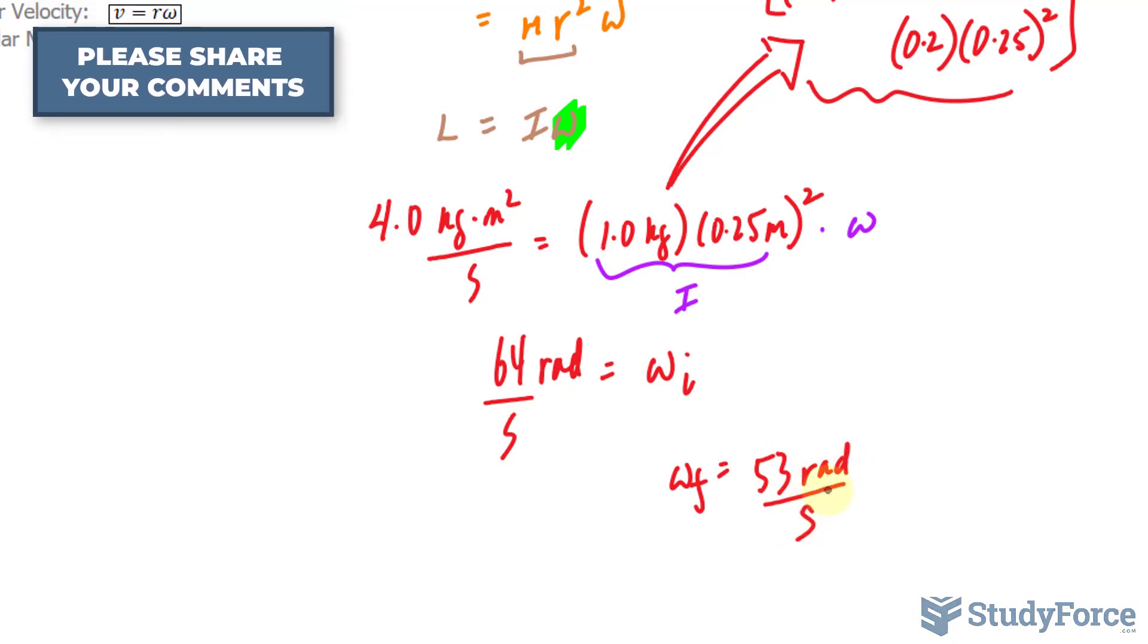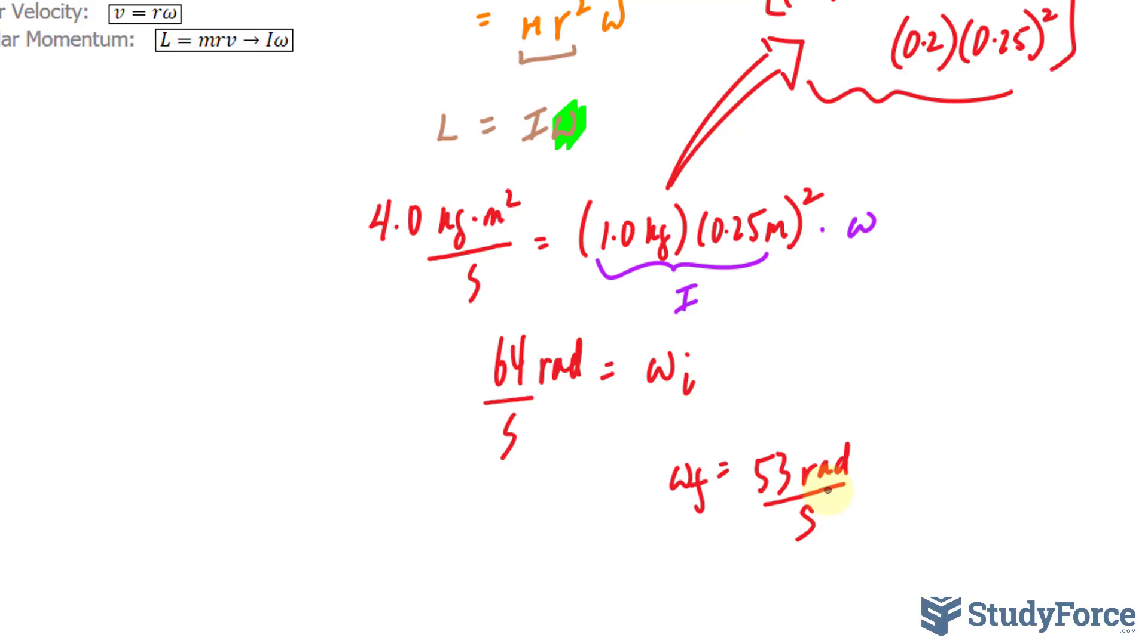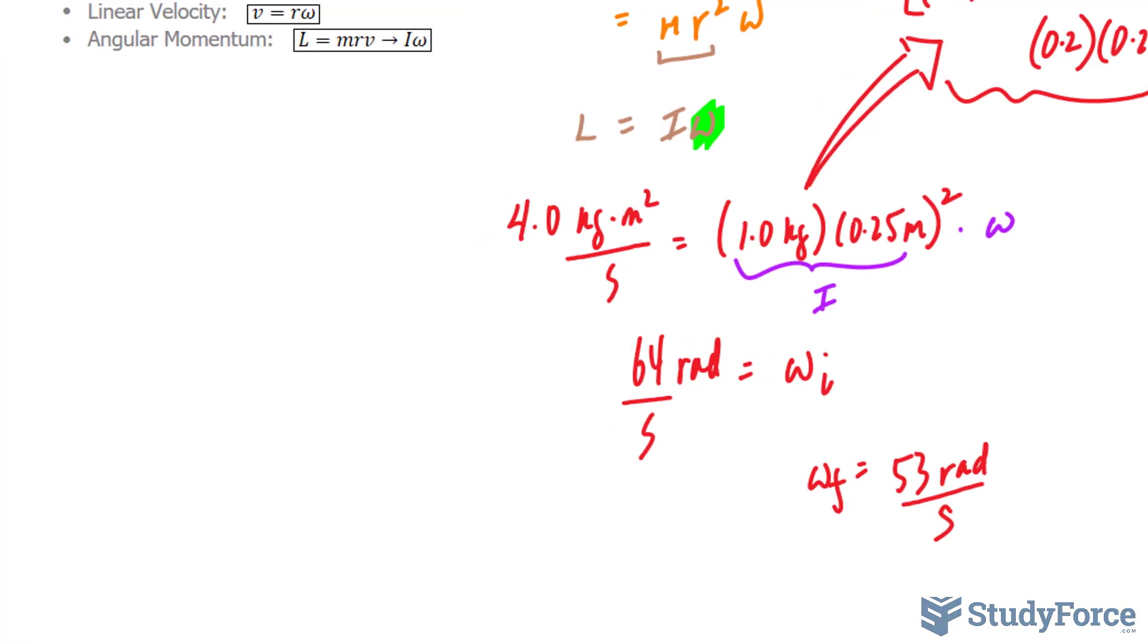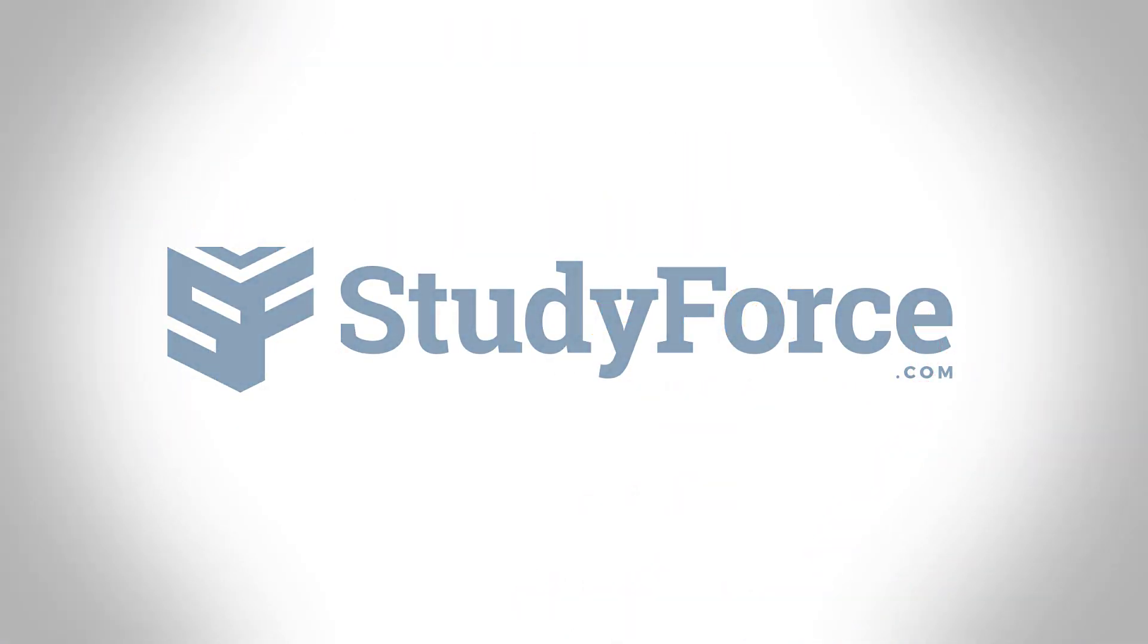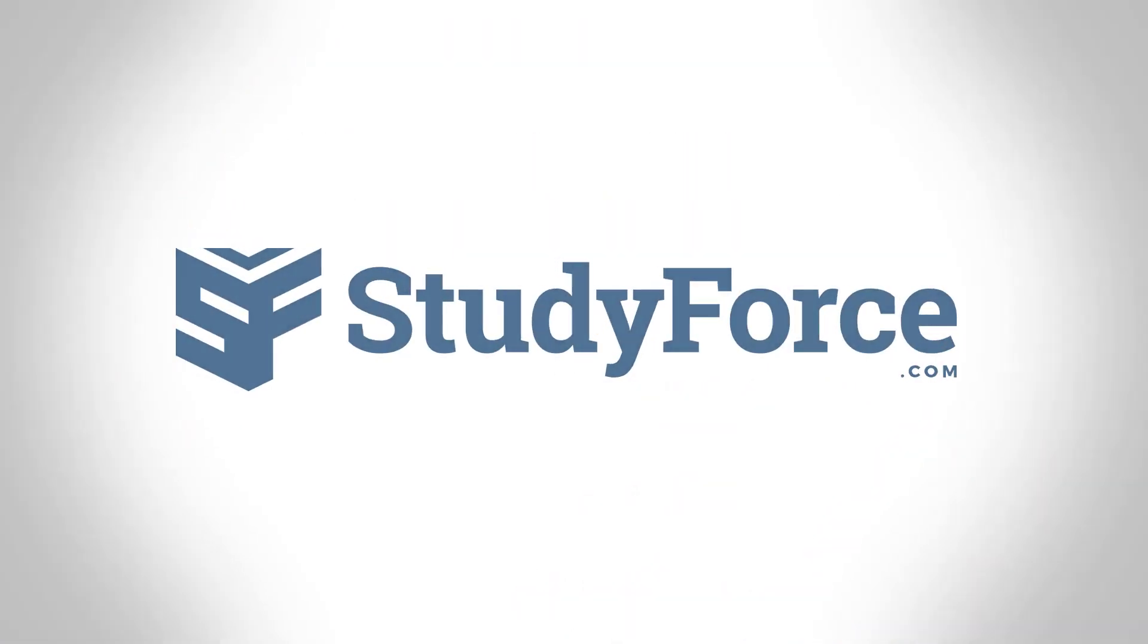As we would expect, the angular velocity has decreased because adding this lump of clay on the hoop vertically should reduce its speed, its rotational speed. And there you have it. That is how to answer questions involving moment of inertia and angular momentum.